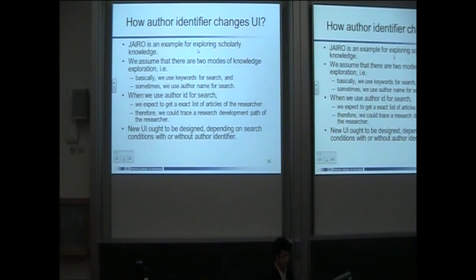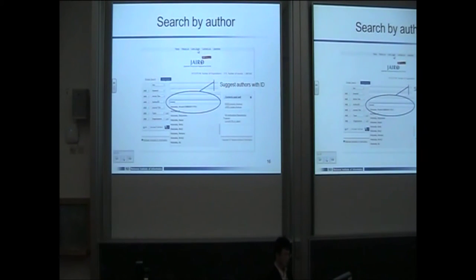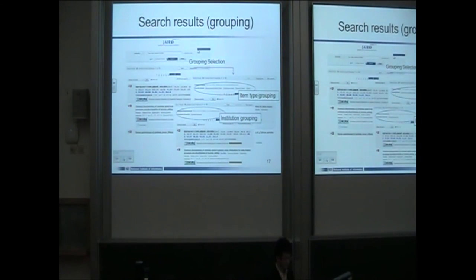We think about how the OSA identifier changes the UI of GYLO. We assume there are two modes of knowledge exploration: basically we use a keyword for search, and sometimes we use a person's name for search. With OSA identifiers, a new UI should be designed. If the user puts in a name and the ID is matched, the search results can be grouped by peer points. We can provide grouping selections, such as item type grouping and institution grouping, which is very friendly to institutional repositories.